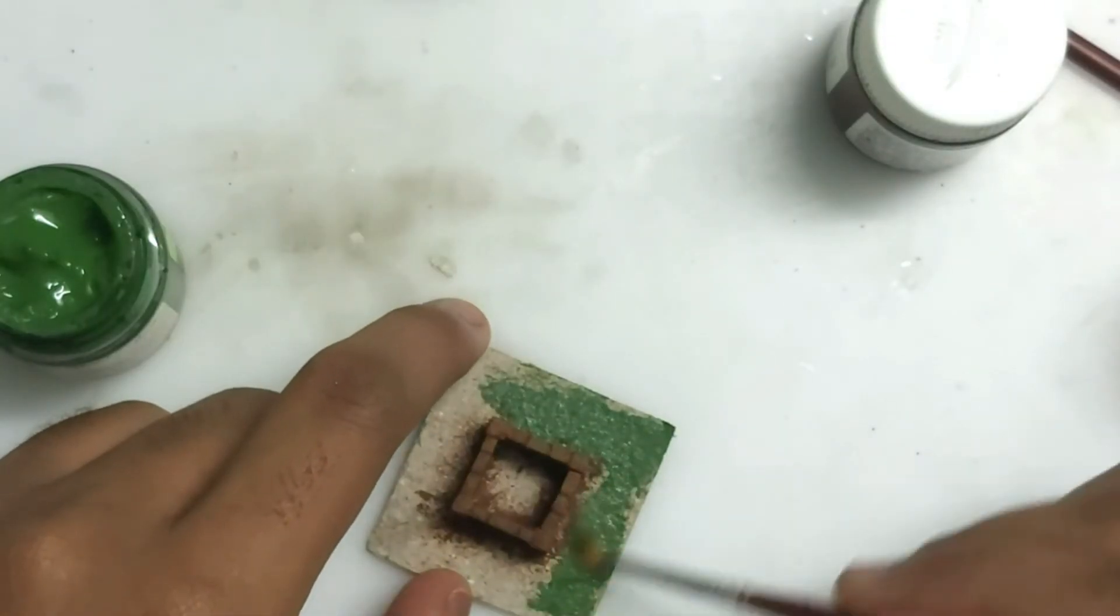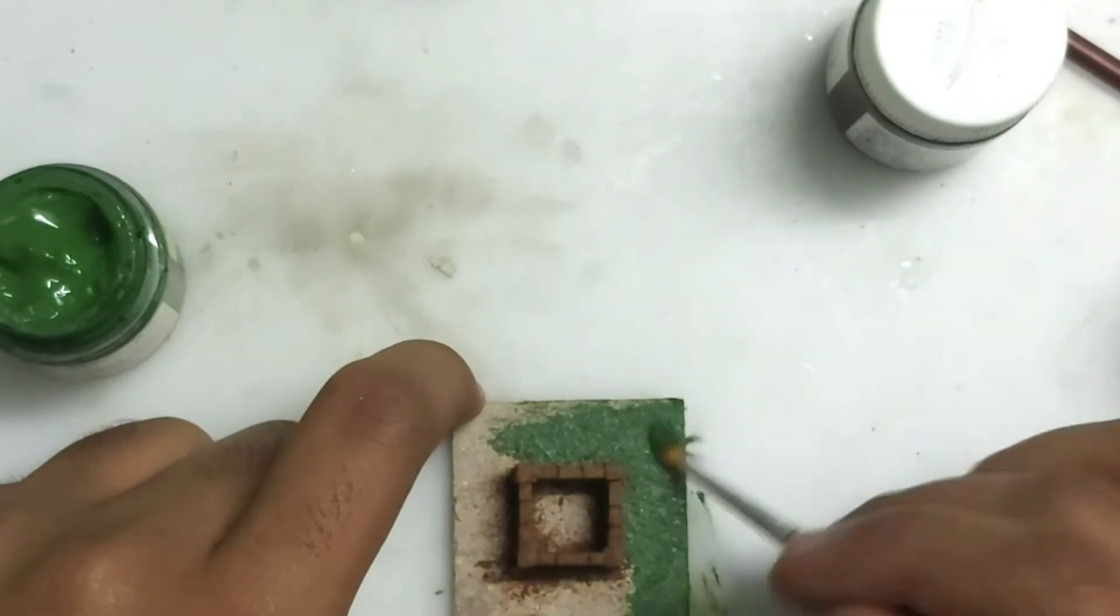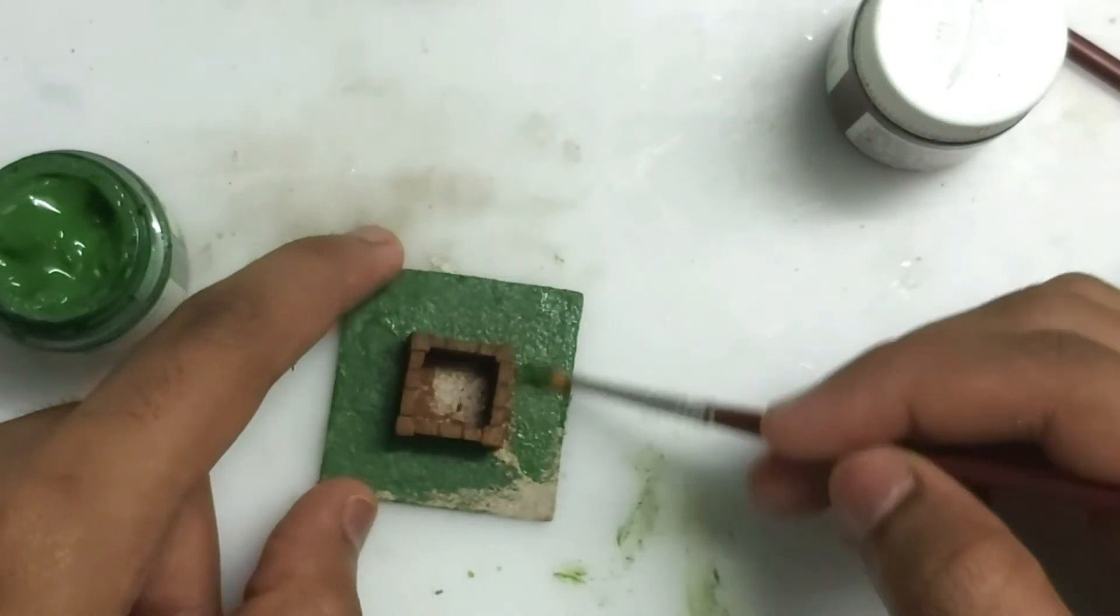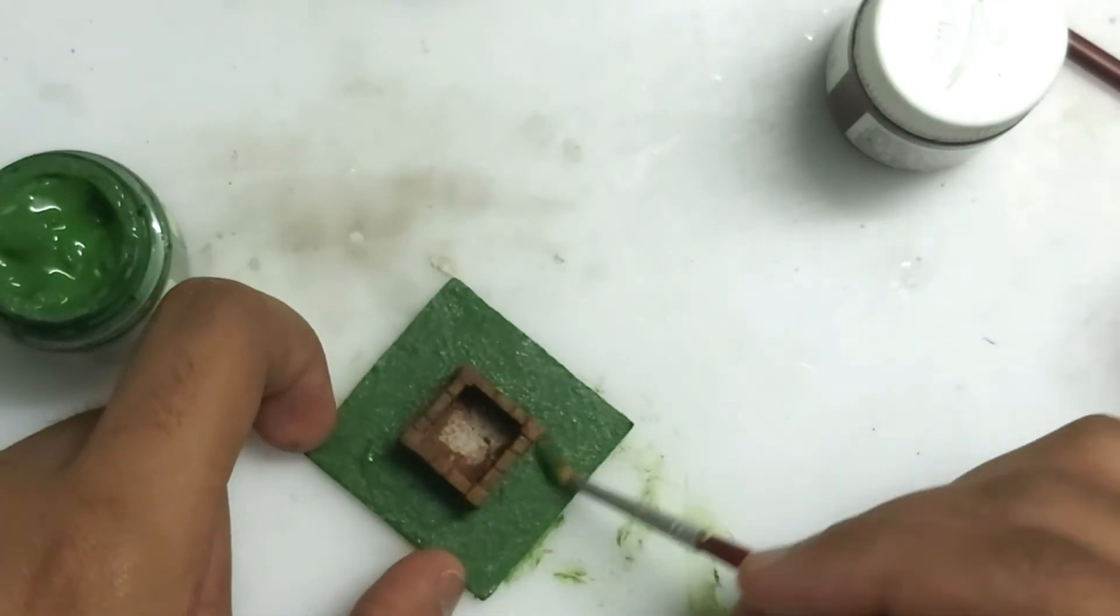Now you can use different shades of green. First you have to keep the sap green color or the dark green, and then you need to dry brush some lighter green colors to give a grass type of texture.